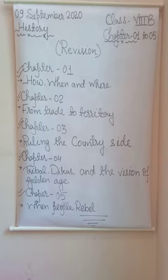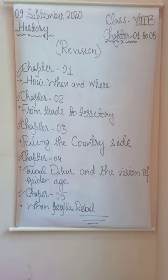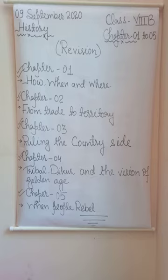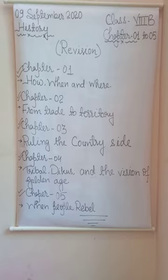The policy of Doctrine of Lapse: under the reign of Lord Dalhousie between 1848 to 1856, the British adopted the policy of lapse. According to this policy, rulers who did not have any legal heir could not pass on their property to an adopted son, and it would be taken over by the British. The kingdoms of Jhansi, Satara and Sambalpur were annexed by this policy.